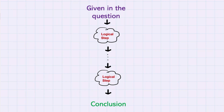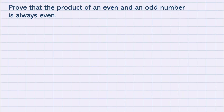So let's take a look at a first example — we'll start with a fairly easy one. Prove that the product of an even and an odd number is always even. Let's start by underlining what the question is giving us. It's telling us to take the product of an even and an odd number, and what we're trying to prove is that it's always even. This is the conclusion — the thing we're trying to prove.